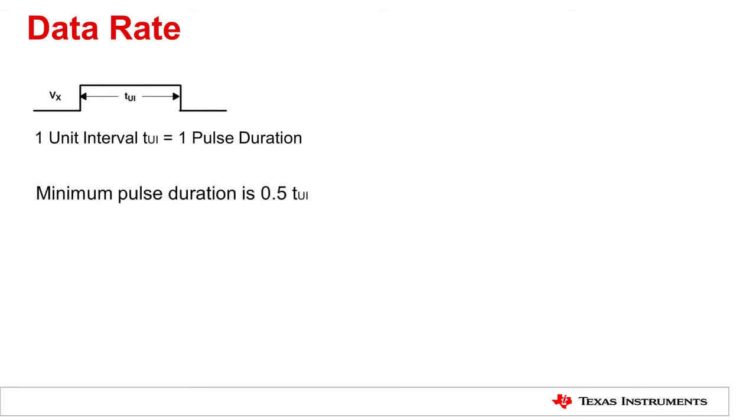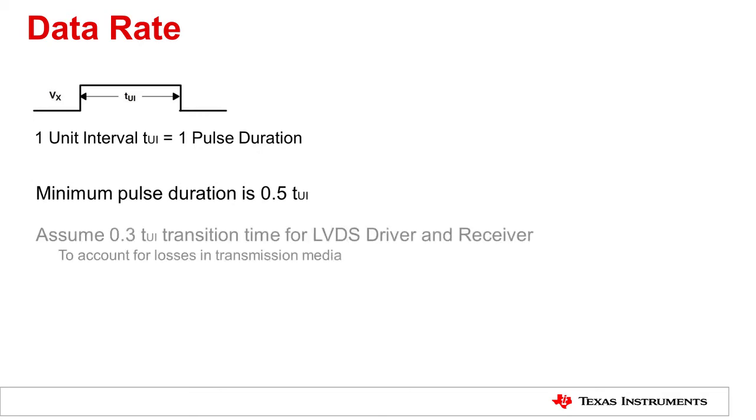Let's recap here. For data rate, we define one UI or one unit interval as one pulse duration. According to LVDS standard, minimum pulse duration is reached when signal transition reaches 0.5 UI. When calculating the minimum pulse duration for LVDS driver and receiver, we assume 0.3 UI to account for losses in the transmission media.